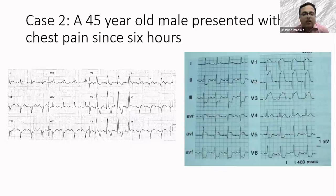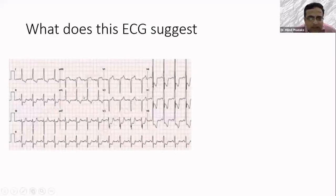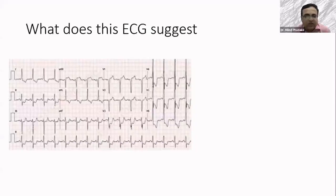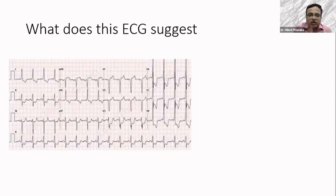The next ECG is a typical chest pain patient showing no ST elevation except in lead AVR, but there are multiple ST depressions. The moment you see ST depressions in six or seven leads — horizontal ST depressions with ST elevation in AVR — you must immediately recognize this as either left main disease or severe triple vessel disease. This is the second ominous pattern in acute coronary syndromes. Chest pain with this pattern: be very careful, hospitalize the patient, and try to arrange a cath as early as possible.